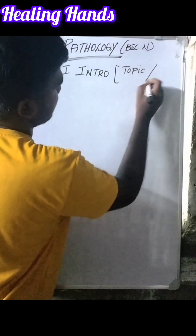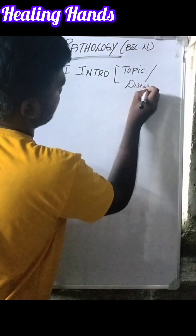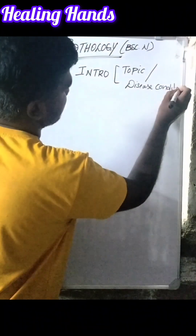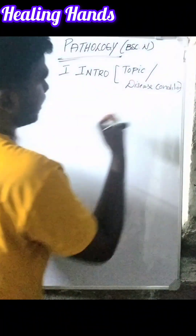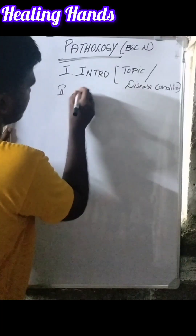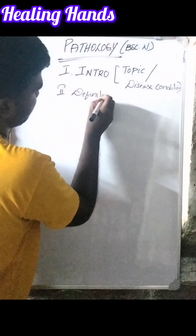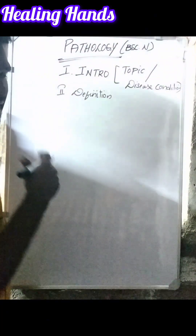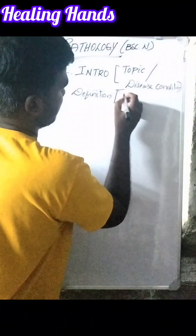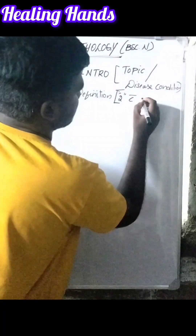Next we should write the definition of the disease condition. We have to write at least two definitions with their authors.